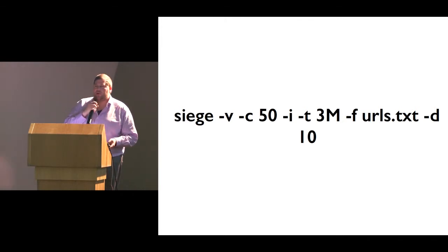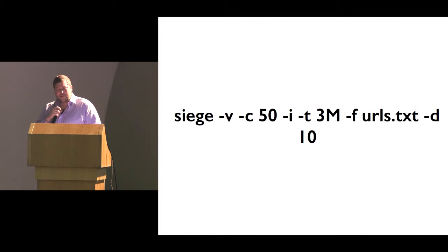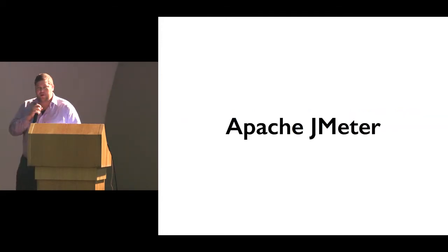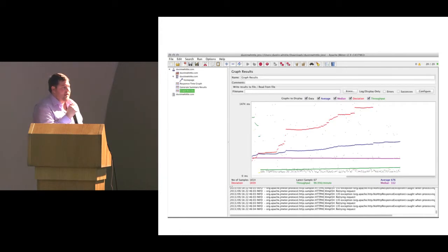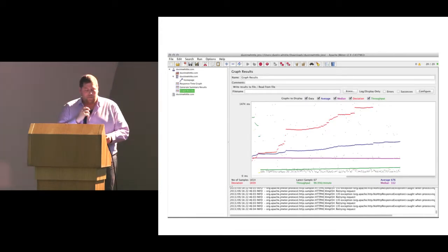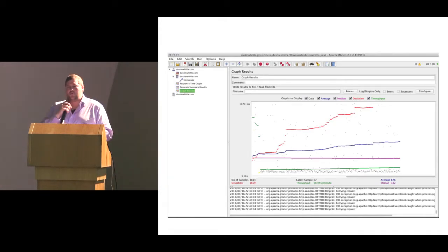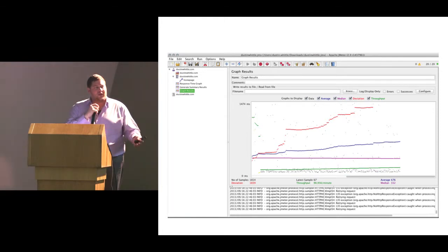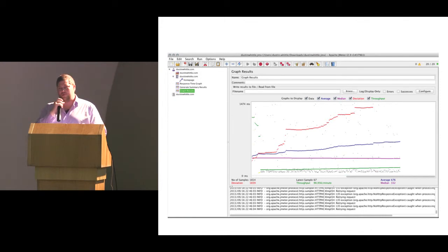If you don't prefer the command line and you're more GUI-oriented, there's Apache JMeter, which I'm quite a big fan of. Apache JMeter gives you a GUI that allows you to create test plans. The benefit is you can load test a lot more than just HTTP — if you want to load test your IMAP server or various other services, it's very easy to use.